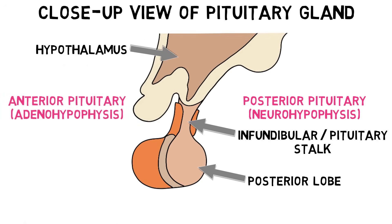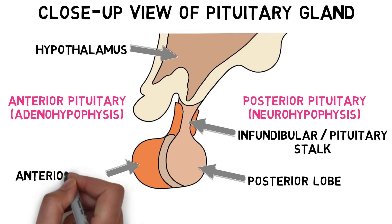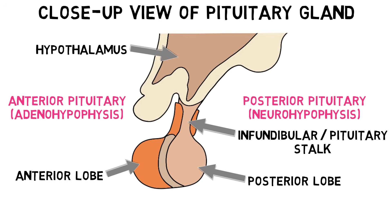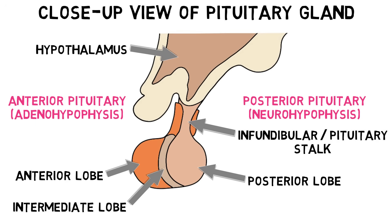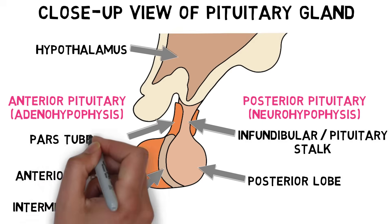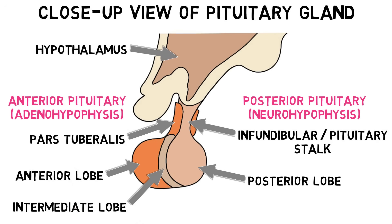The anterior pituitary, also known as the adenohypophysis, consists of three parts: the anterior lobe, a smaller intermediate lobe that's typically only distinct in the fetal and newborn pituitary, and a section of tissue called the pars tuberalis, which wraps around the infundibular stalk.